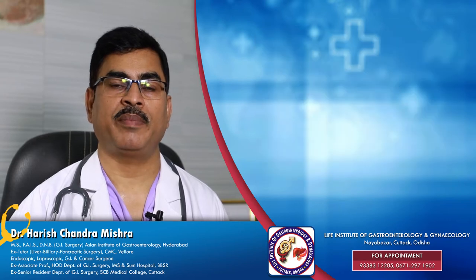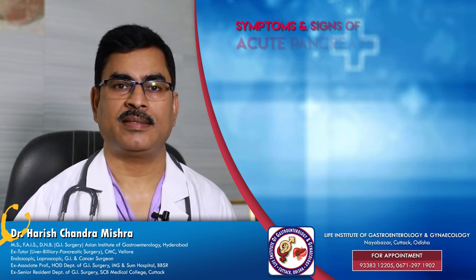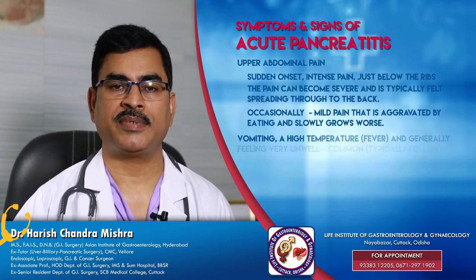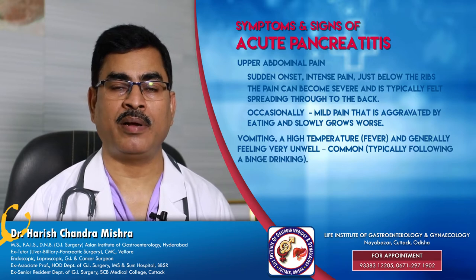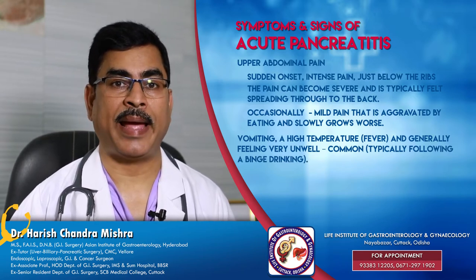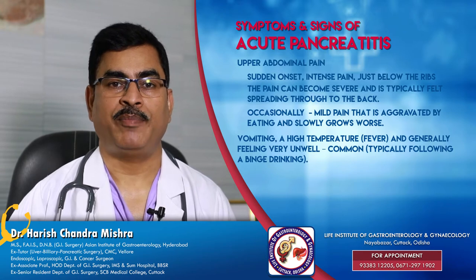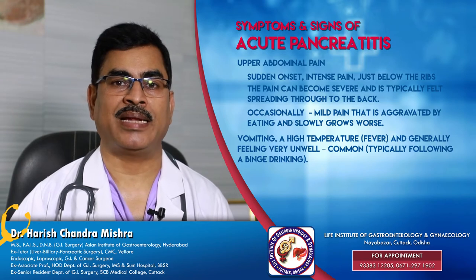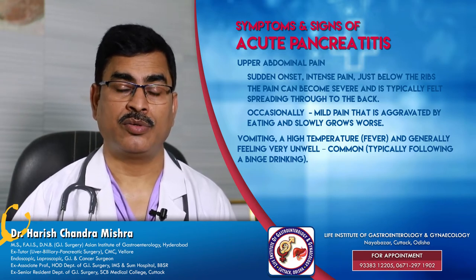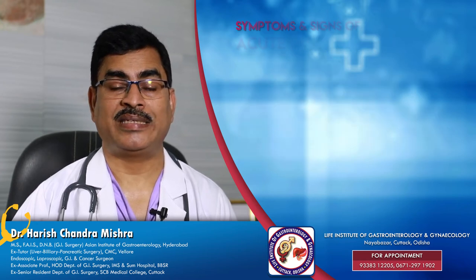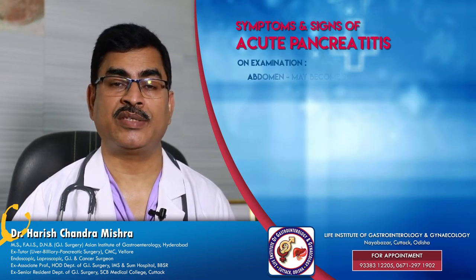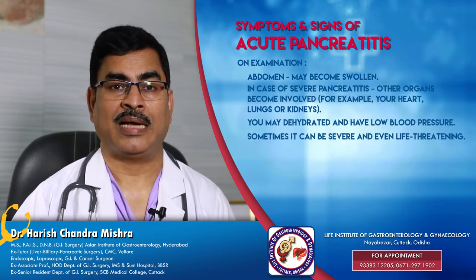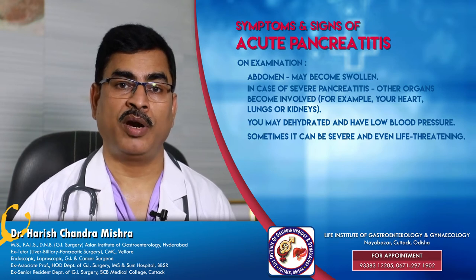Patients with pancreatitis usually present with severe upper abdominal pain just below the ribs, which typically radiates to the back. This pain often follows binge drinking and is so severe that analgesic injections are required. There may be associated vomiting and fever. On examination, the whole abdomen is swollen and tender, and the patient may have low blood pressure.